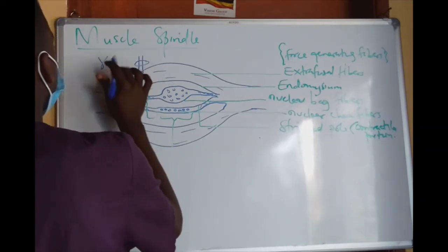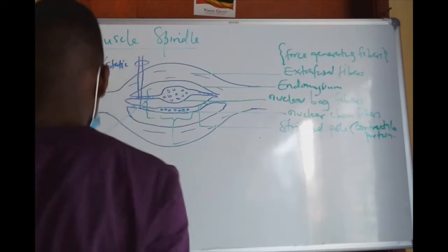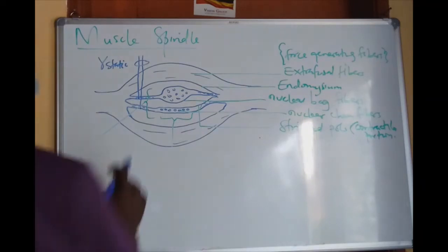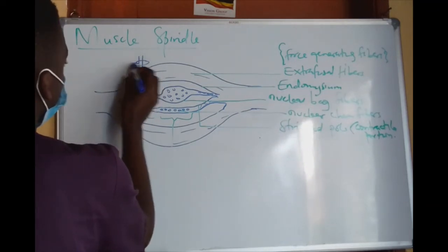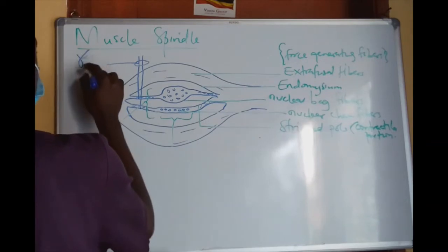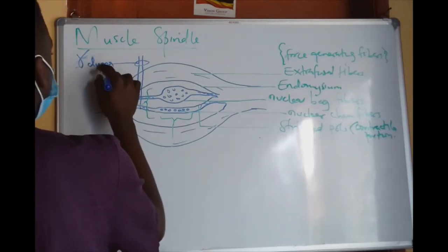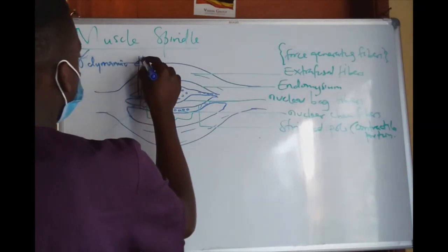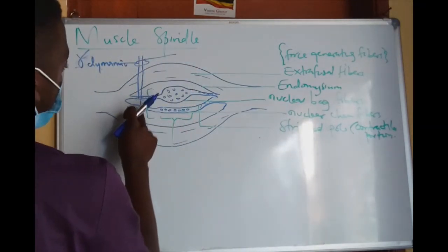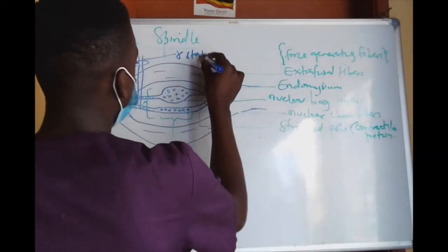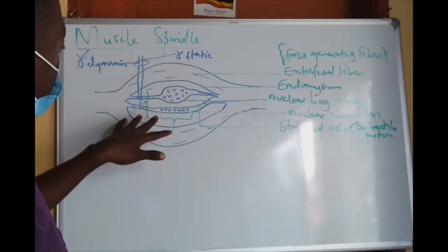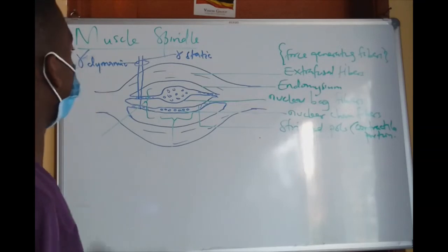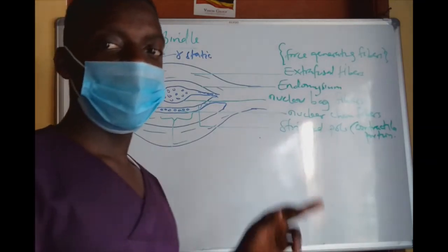Some of these will be static gamma fibres. We can also have gamma which is dynamic. The one that goes to the nuclear bag is gamma-dynamic, whereas the one that goes to the nuclear chain is gamma-static. This will be brought out in reflexes — static reflexes will be from the nuclear chain and gamma-dynamic from the nuclear bag fibres.